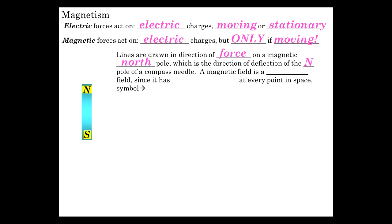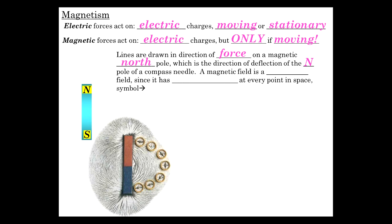So, here we have a graphic of that, north pole, south pole, and you'll notice the field lines are in the direction that the compass points. So, that's a good example of that. So, that's how we do it by convention.